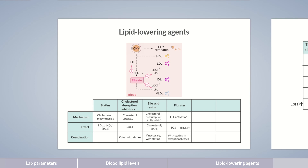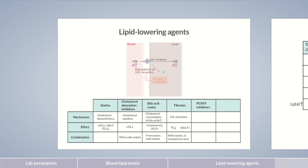A relatively new lipid-lowering agent on the market is PCSK9 inhibitors. They were developed mainly for high-risk patients who don't achieve optimal LDL cholesterol levels through statins, or patients that don't tolerate statins well. However, this monoclonal antibody therapy is expensive due to production costs. They selectively inhibit the enzyme PCSK9 and therefore lysosomal degradation of LDL receptors. This increases LDL uptake into the cells and significantly reduces LDL cholesterol in the blood. Sole administration of PCSK9 inhibitors can reduce LDL cholesterol by as much as 60%, and in combination with statins and cholesterol absorption inhibitors by as much as 85%.